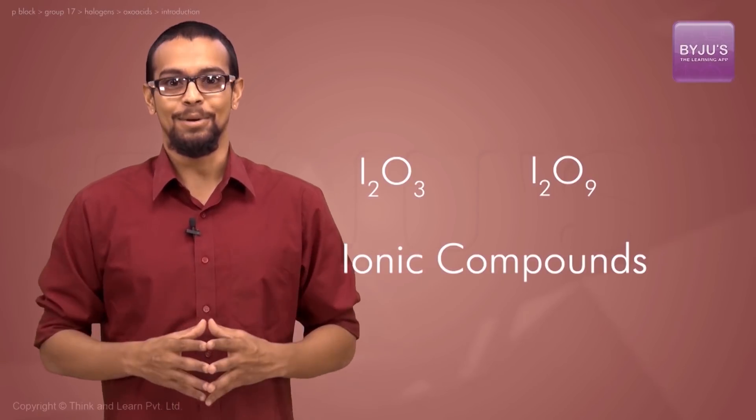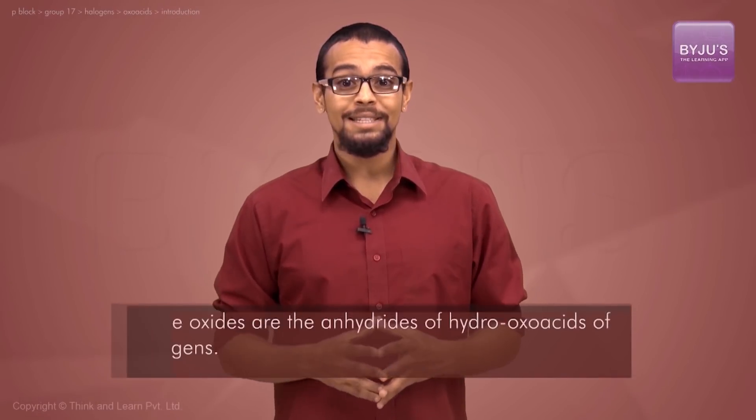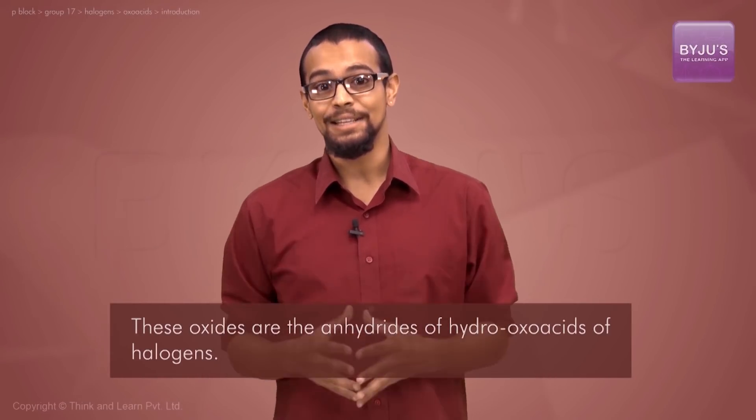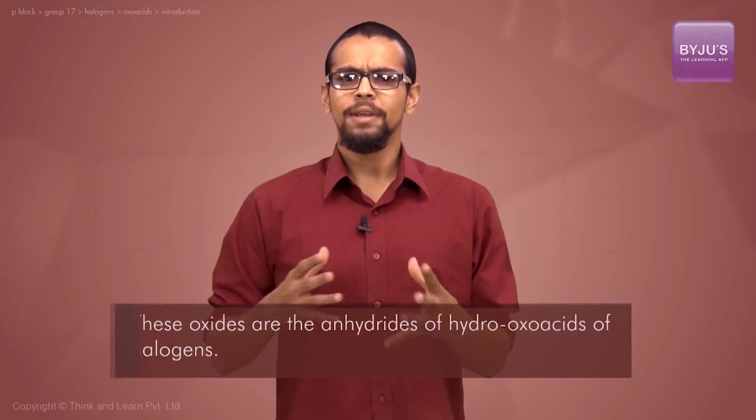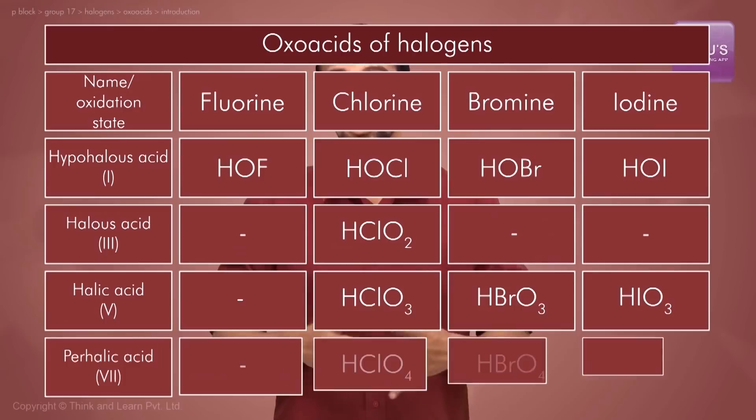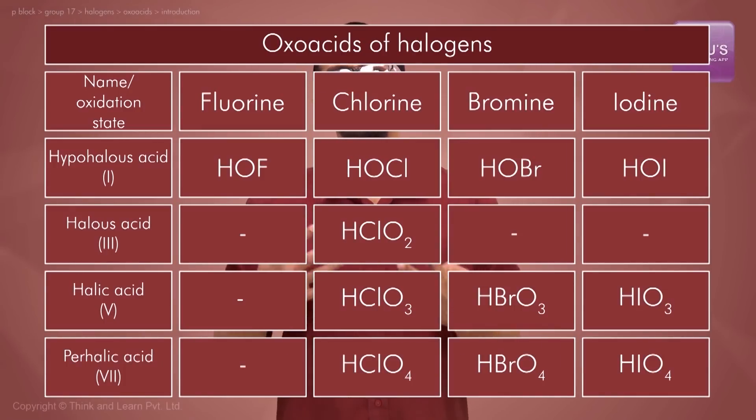Most of these oxides can be considered as anhydrides of hydroxy acids or oxyacids of halogens. Fluorine can only form one oxyacid, HOF. The other halogens - chlorine, bromine, and iodine - can form four different series of oxyacids where the halogen is in +1, +3, +5, or +7 oxidation states.